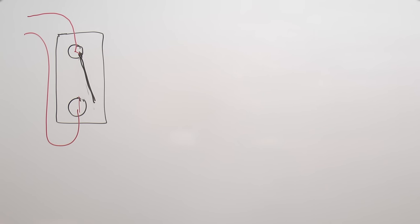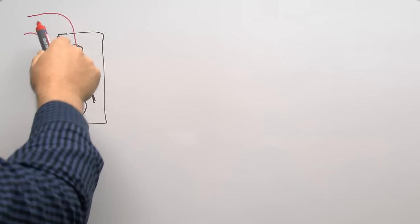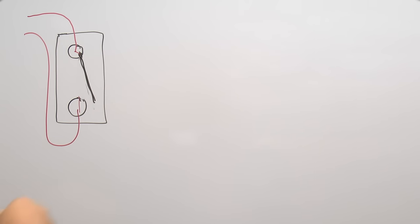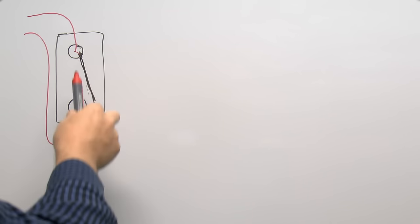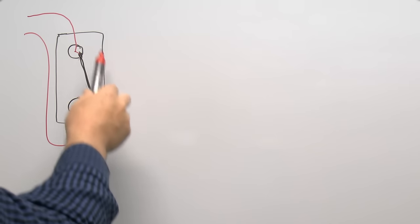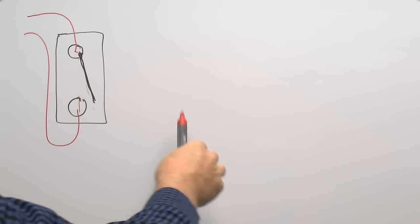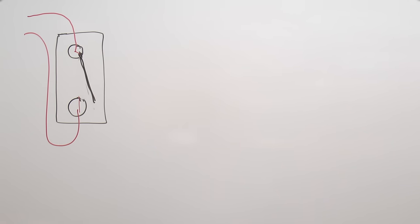In terms of adding an extra switch or more than one switch, the connections at the light end are going to be pretty much the same — you still have the line coming in with the actual power and the switched line going back to the light fitting. All that's going to change is the type of switch itself, and of course we'll be adding an extra switch or more to allow control from two or more positions.